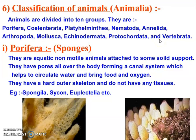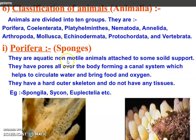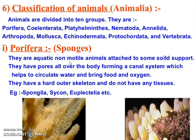We are going to start now with Porifera. They are also called sponges. They are aquatic as well as non-motile animals which are attached to a solid support. They have pores all over the body which form a canal system. They have an outer skeleton and do not have any tissue. Examples are Spongilla, Sycon, Euplectella, and Leucosolenia.